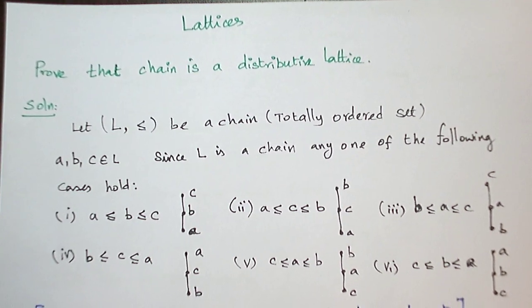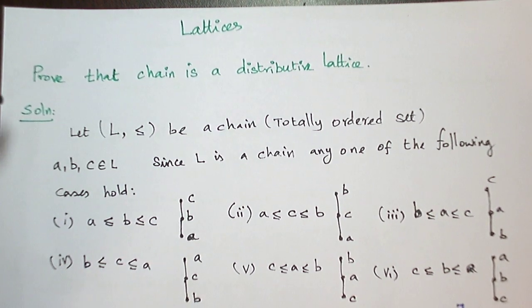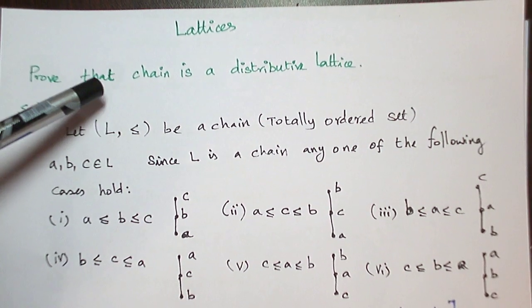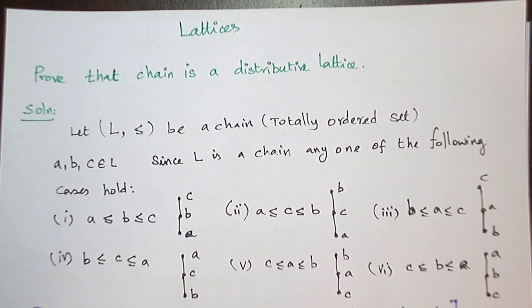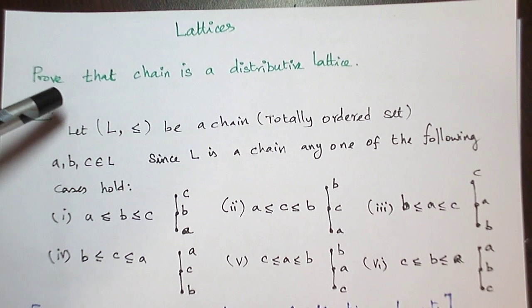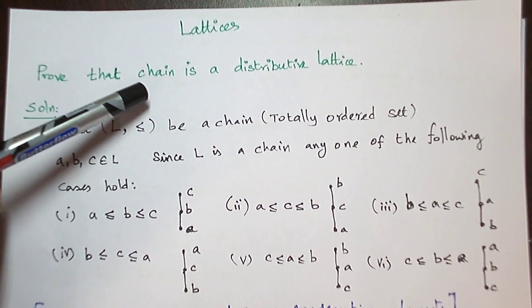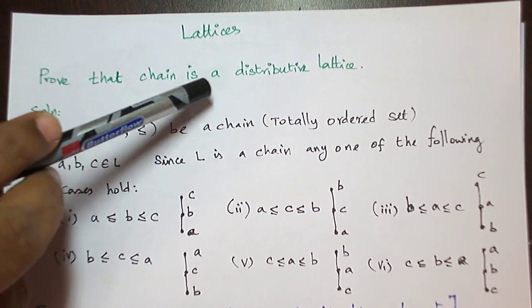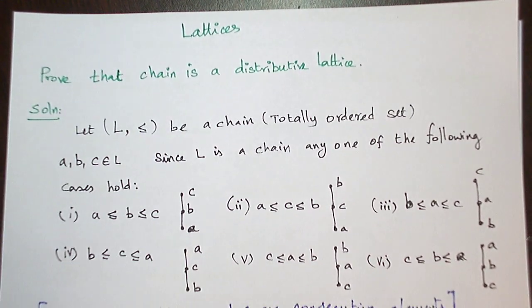Hello students, today let us see a result in lattices and Boolean algebra. This is the result: prove that every chain is a distributive lattice.